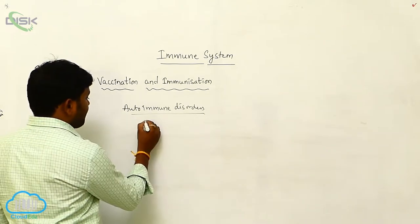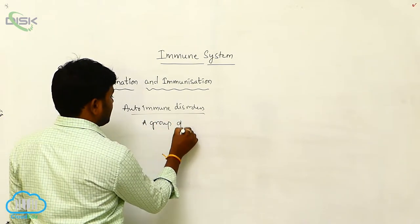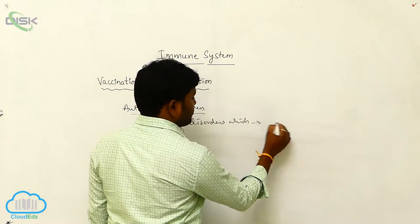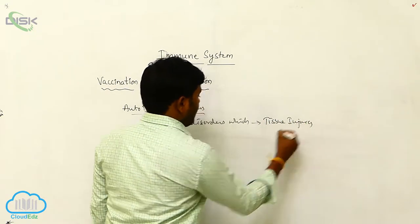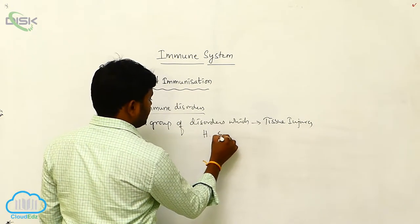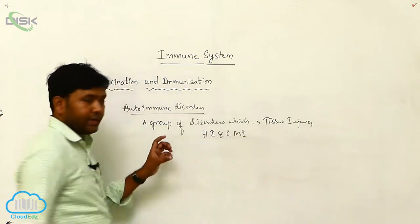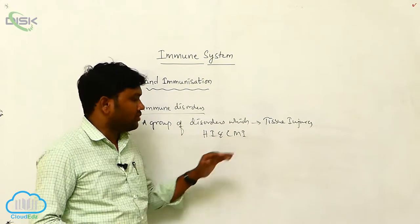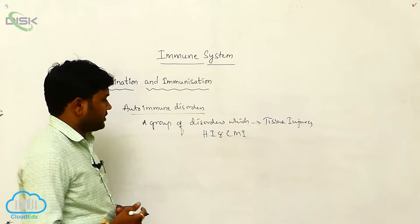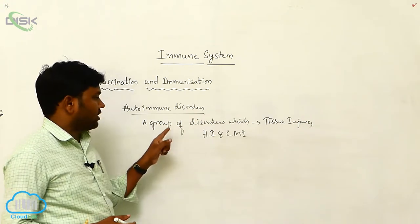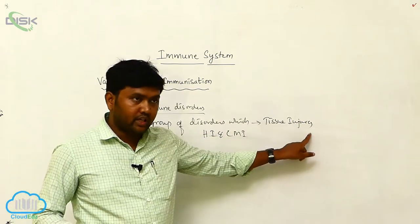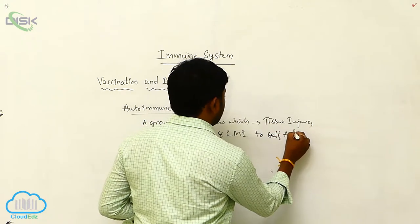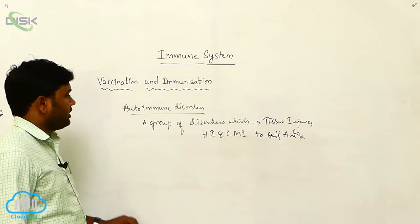Autoimmune disorders are a group of disorders which cause tissue injury by the humoral and cell-mediated immunity to self-antigens. So auto means self, and these disorders involve immune responses directed against the body's own tissues.